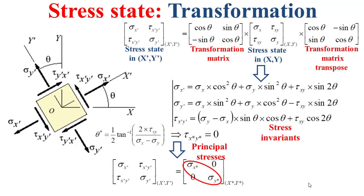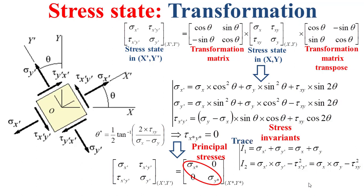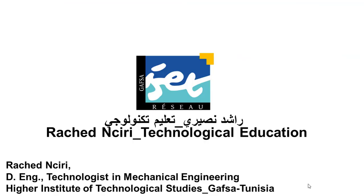In the framework of 2D stress state transformation, there are stress invariants. A stress invariant is a mathematical quantity related to the 2D stress state matrix that does not change even when the frame of reference changes. These stress invariants are shown in this slide: I1 is the trace of the 2D stress state matrix, and I2 is the determinant of the 2D stress state matrix. These quantities remain unchanged regardless of which frame of reference is used.